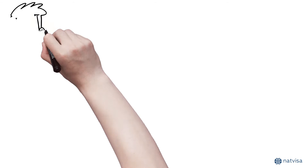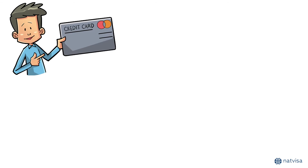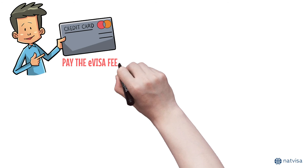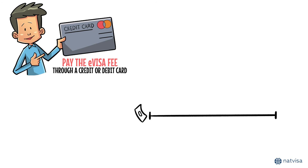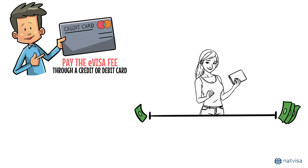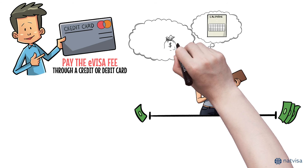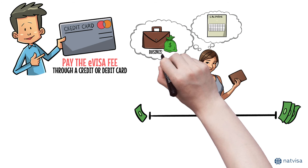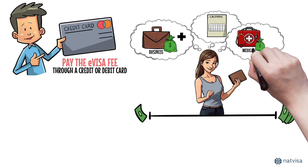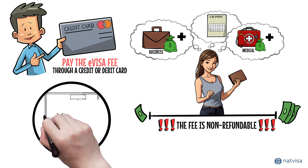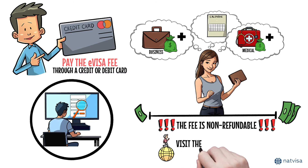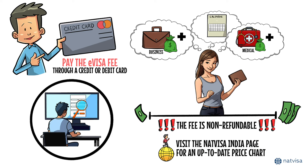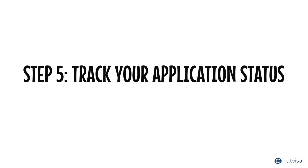Step 4: Pay the e-visa fee. Upon completing your application, proceed to pay the e-visa fee through a credit or debit card. For U.S. citizens, the tourist e-visa fee ranges depending on your intended length of stay and the season. Note that business and medical e-visas carry distinct fees. Since the fee is non-refundable, it's important to thoroughly review your application before moving forward. Visit the Natvisa India page for an up-to-date price chart.